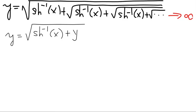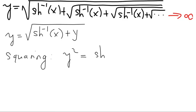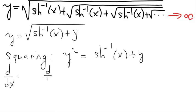Now let's take the square of this term. Squaring the above, we get y squared equals arc hyperbolic sine of x plus y. Now let's start differentiating. We want to differentiate this entire line with respect to x. The left-hand side, by employing the chain rule, gives us dy squared/dy times dy/dx.